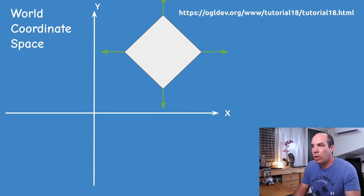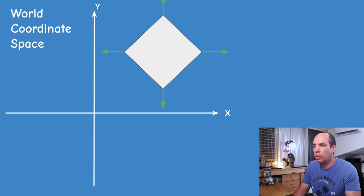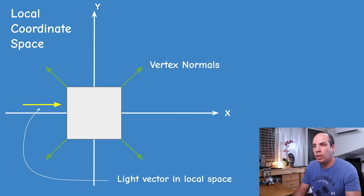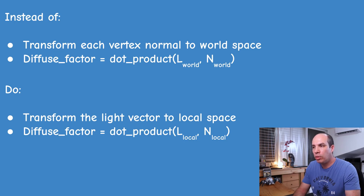However, this multiplication can actually be avoided. Instead of transforming the normal into world space to do a dot product with the light direction (which is defined in world space), we can transform the light vector into the local space of the object and do the dot product in local space with the original normal. This replaces a per-vertex matrix multiplication with a single transformation per draw call, which is obviously more efficient.